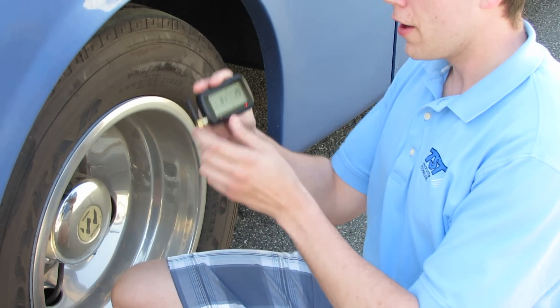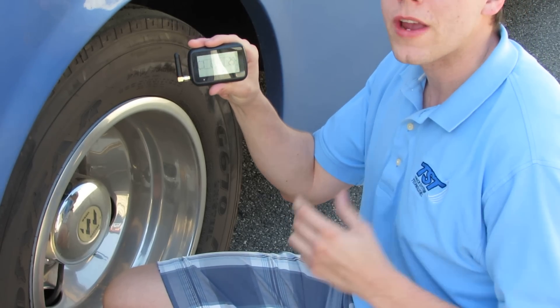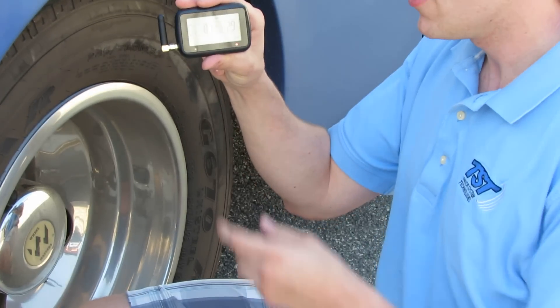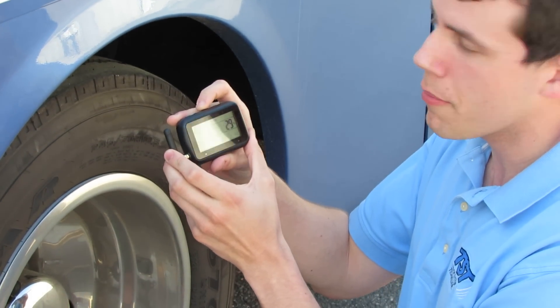Once the sensor is triggered, you will see tire pressure and temperature. For this demonstration though, we have not set a high and low pressure yet, so the monitor is going to alarm you. To silence the alarm, press any button.